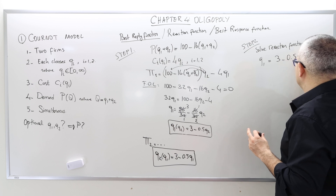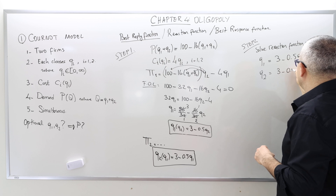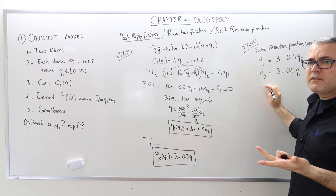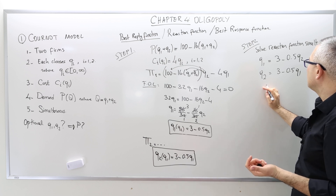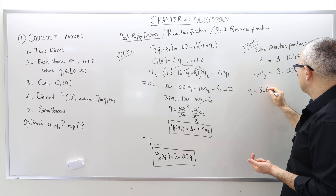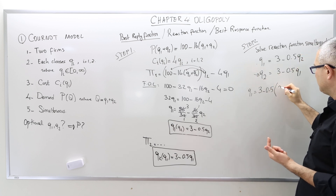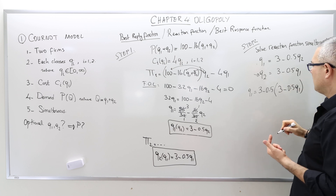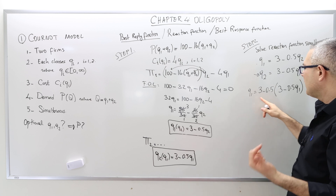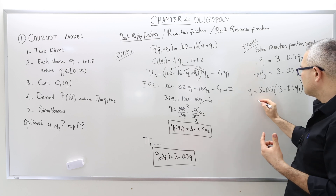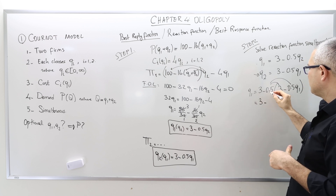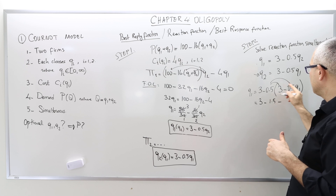Solving simultaneously means treating both reaction functions as a system of two equations with two unknowns: q1 equals 3 minus 0.5q2, and q2 equals 3 minus 0.5q1. To solve, substitute the second equation into the first — wherever I see q2, I write 3 minus 0.5q1. So q1 equals 3 minus 0.5 times (3 minus 0.5q1). Now distribute the 0.5 over the parenthesis.